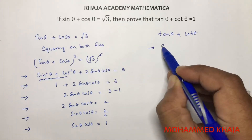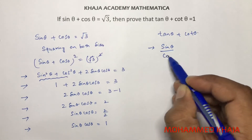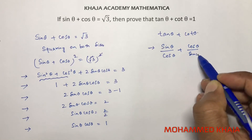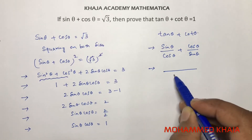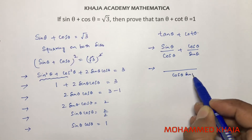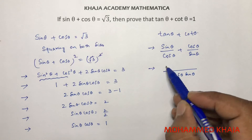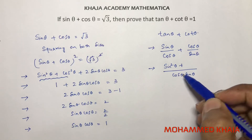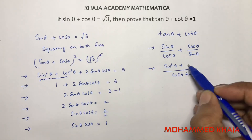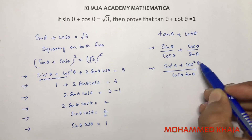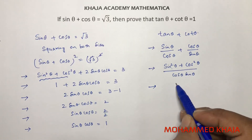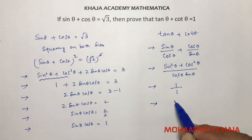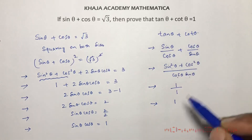Tan theta can be written as sin theta over cos theta, and cot theta can be written as cos theta over sin theta. Taking the common denominator sin theta cos theta, the numerator becomes sin squared theta plus cos squared theta, which equals 1. Since sin theta cos theta also equals 1, tan theta plus cot theta equals 1.